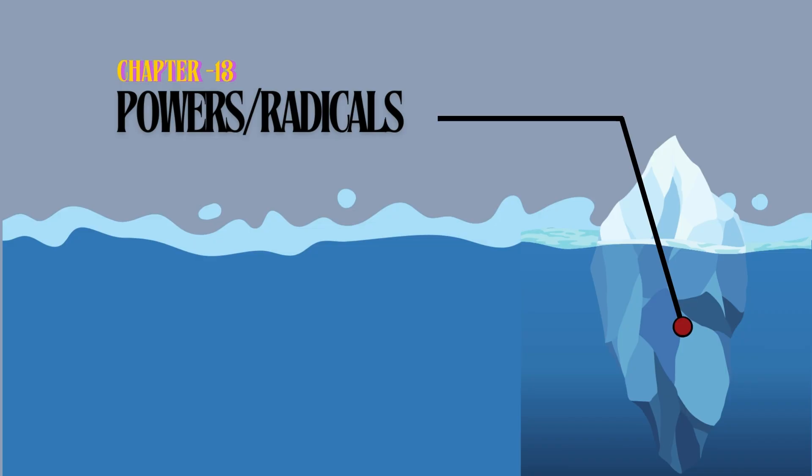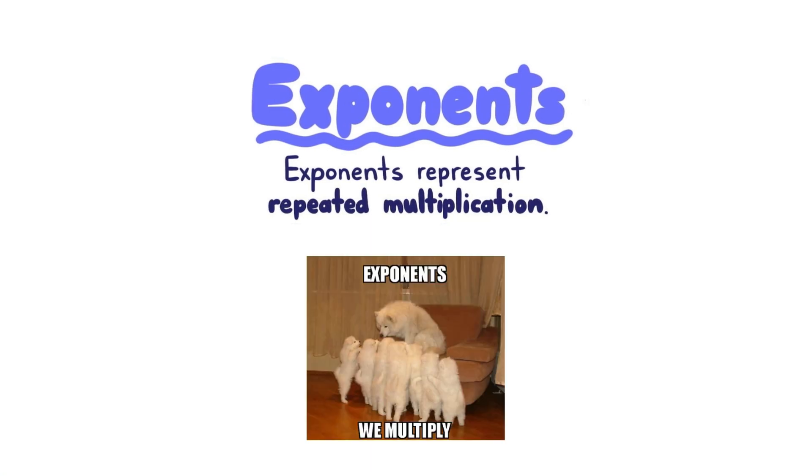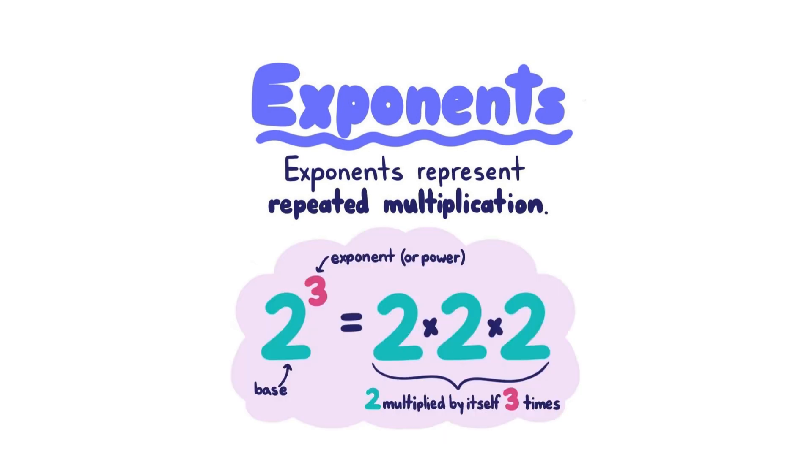Powers slash radicals. Exponentiation is repeated multiplication. The exponent tells you how many times to multiply the base. For example, 2 to the third power is 2 times 2 times 2, which is 8. 8 is called the third power of 2.